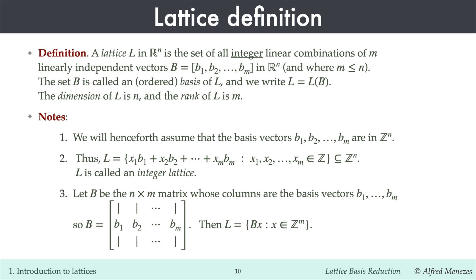If we let B denote the n-by-m matrix whose columns are the basis vectors, then the lattice can be expressed compactly as comprising all length-n vectors Bx, as x ranges over all length-m integer vectors x. This is the set of all integer linear combinations of the columns of B.